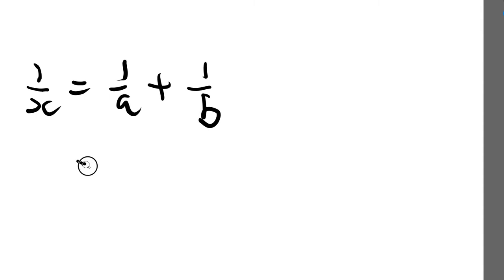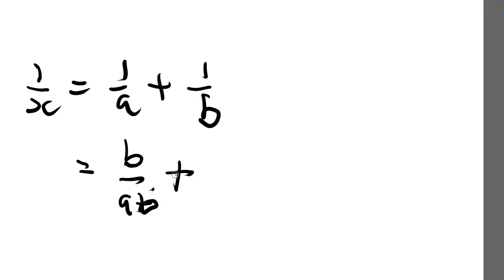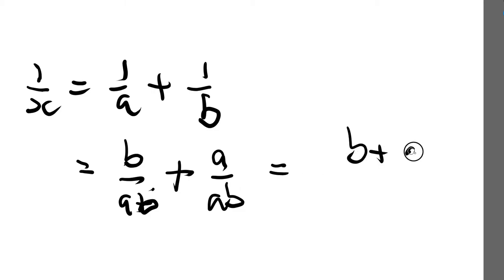Here we've got 1 over X equals 1 over a plus 1 over b. We can say this is the same as if we times the top and bottom by b, that's b over ab, and there's a plus there, and then this is a over ab. So because both fractions are over ab, this is the same as b plus a over ab.